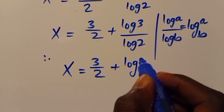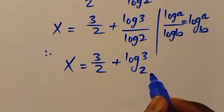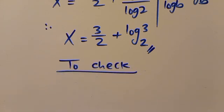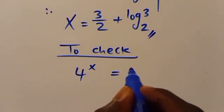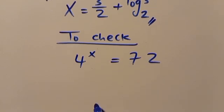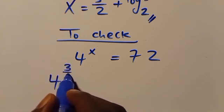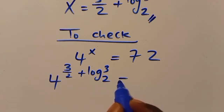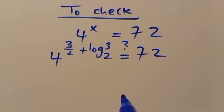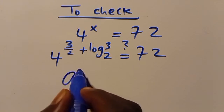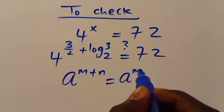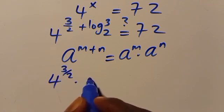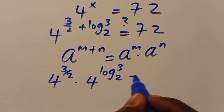To check, recall we have 4 to the power of x equals 72. Substituting x equals 3/2 plus log base 2 of 3, we get 4 to the power of (3/2 plus log base 2 of 3). Using the exponent rule a^(n+m) = a^n times a^m, this becomes 4^(3/2) times 4^(log base 2 of 3).